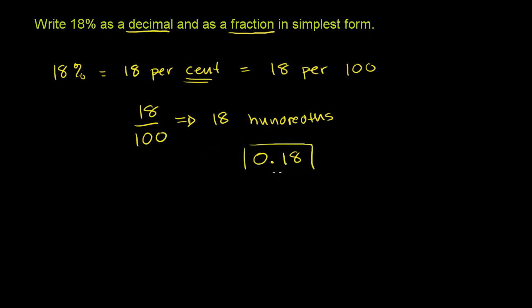So this is written in decimal form. And if we write it as a simplified fraction, we need to see if there is a common factor for 18 and 100. And they're both even numbers, so we know they're both divisible by 2.